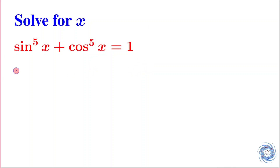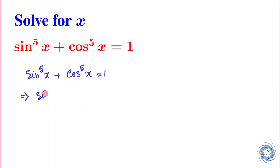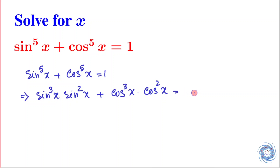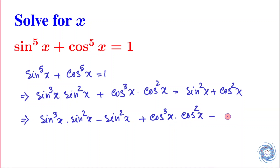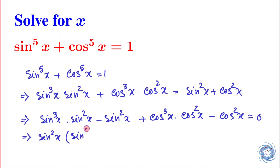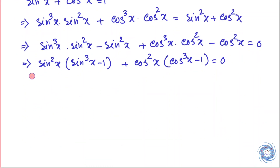Let us rewrite the equation again. Now let us use the fact that sin²x + cos²x = 1. From here we have, and now this can be written as the factored form.